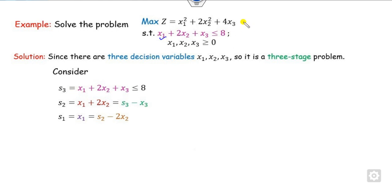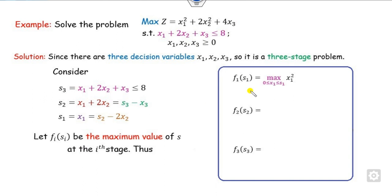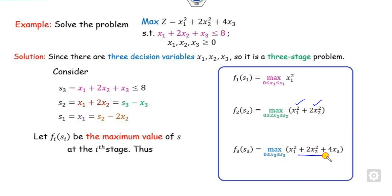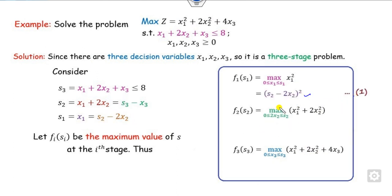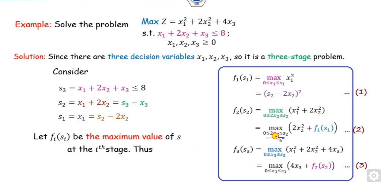Now, once we have the constraints, look at the objective functions. f(s1) is a function of x1. f(s2) consists of the first two terms: x1 squared plus 2x2 squared. Similarly for the third stage. Substituting x1 = s2 minus 2x2 gives equation 1. I substitute x1 as f(1, s1), so f(1, s1) plus 2x2 squared. This problem is maximization. The domain for 2x2 is from 0 to s, and for x3 it is written accordingly.